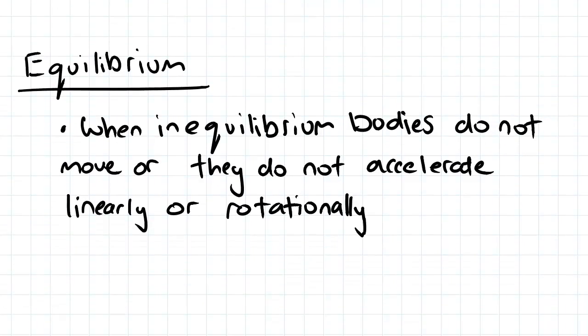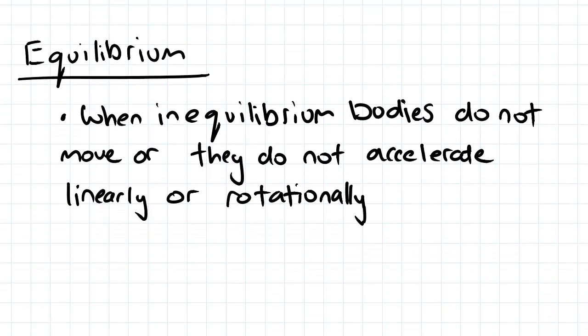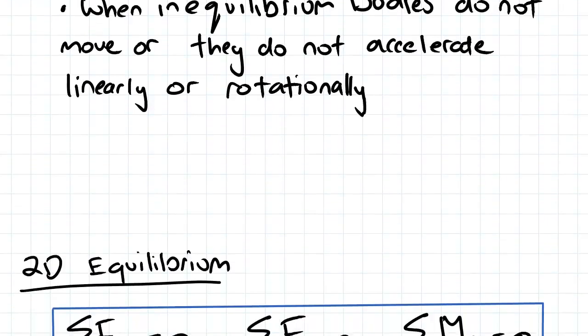Equilibrium: when in equilibrium, bodies do not move or they do not accelerate linearly or rotationally. In this course however, we'll only be looking at bodies that are completely stationary and most likely beams. Another way to define equilibrium is that the vector sum of all forces or moments is equal to zero.